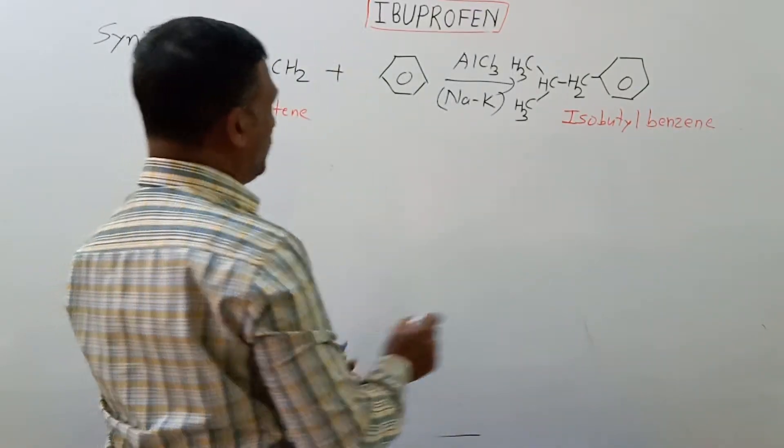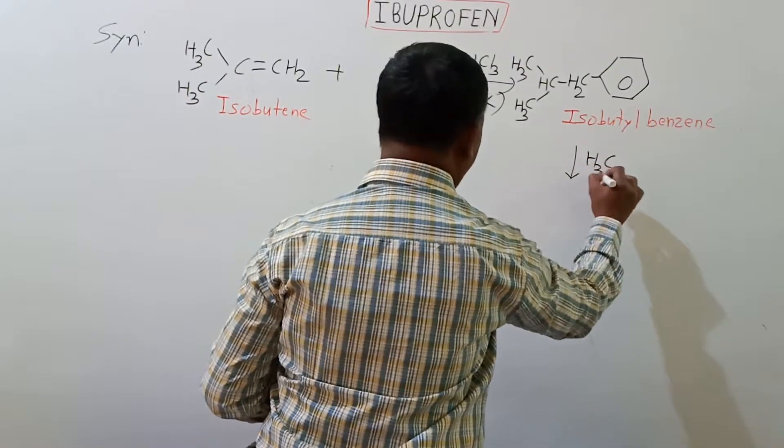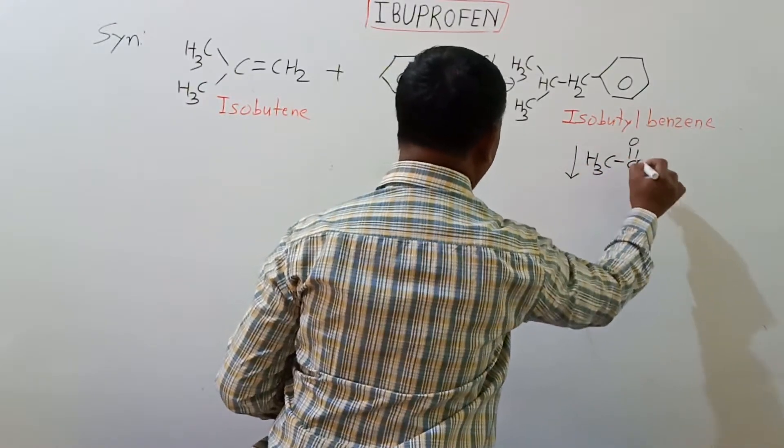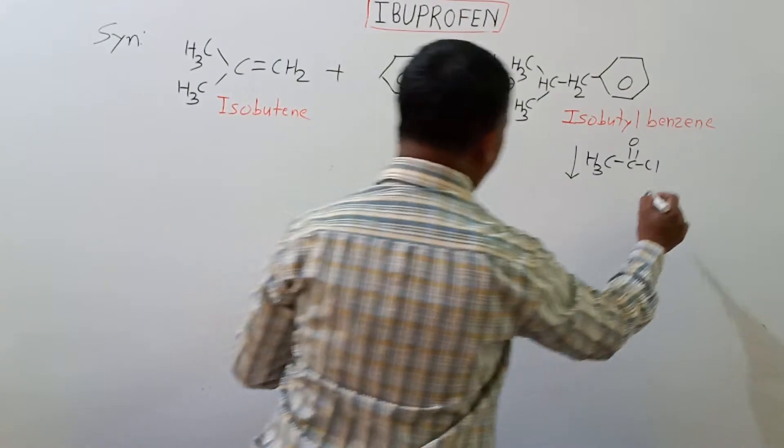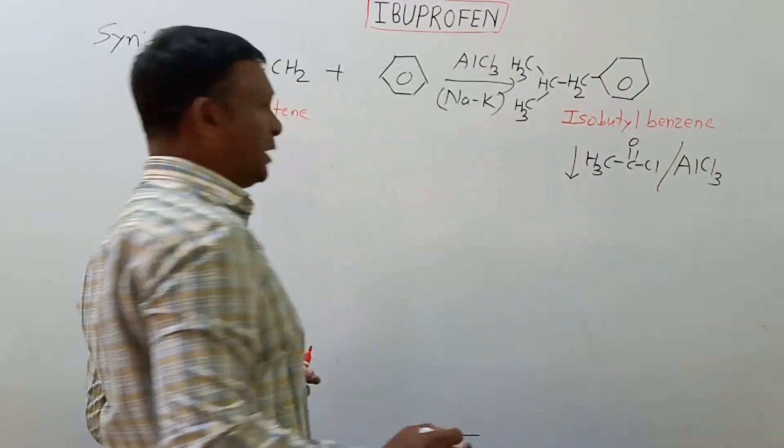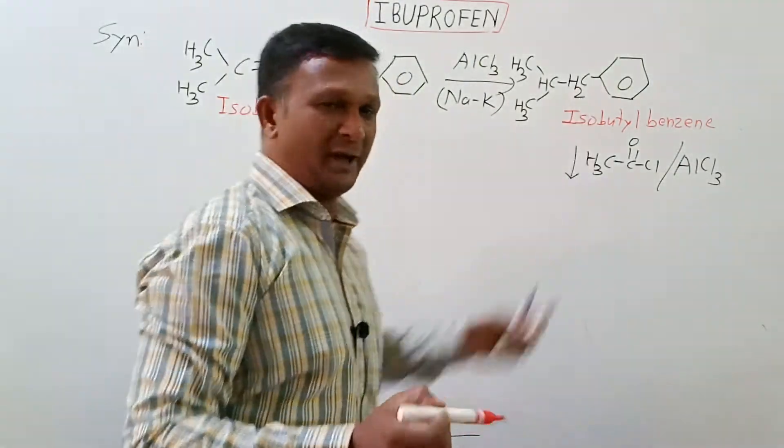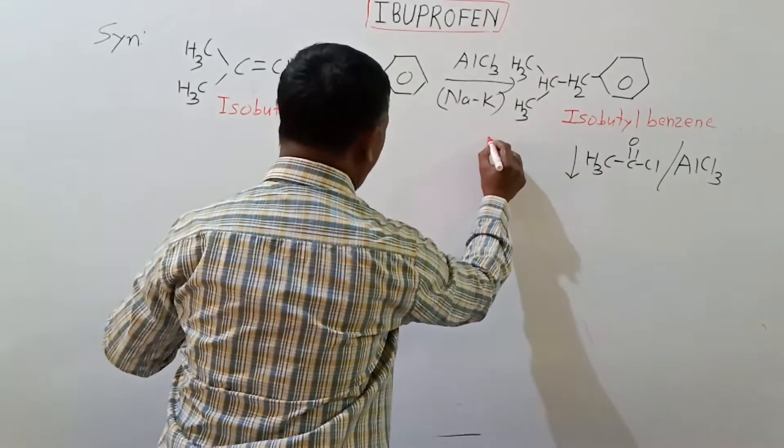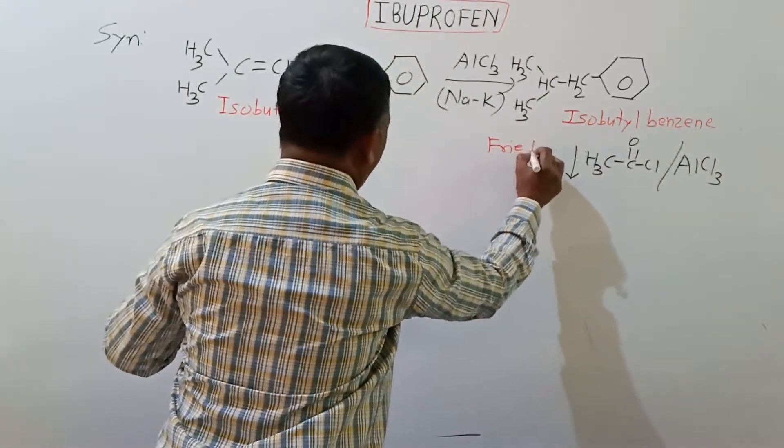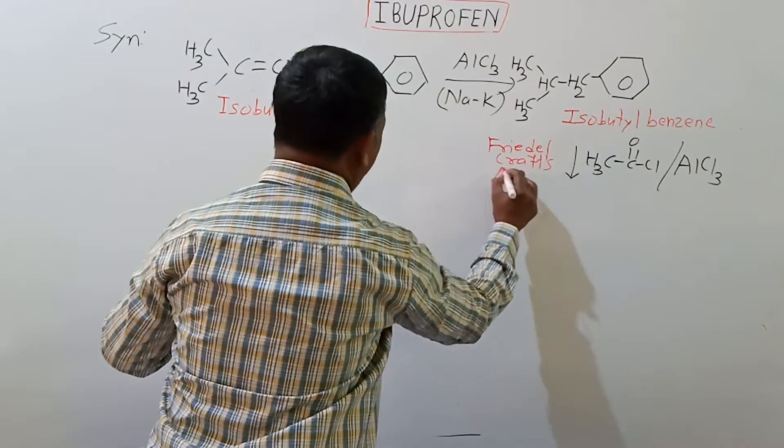The isobutene then is reacted with acetyl chloride, CH3COCl in presence of AlCl3, aluminium chloride, which is a Lewis acid. This is a very familiar reaction and it is known as Friedel-Crafts acylation reaction.